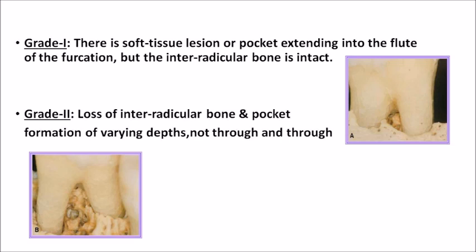Grade one: there is a soft tissue lesion or a pocket extending into the flute of the furcation. The pocket extends into the furcation but the interradicular bone is intact — the bone between the two or three roots will be intact. That is grade one.